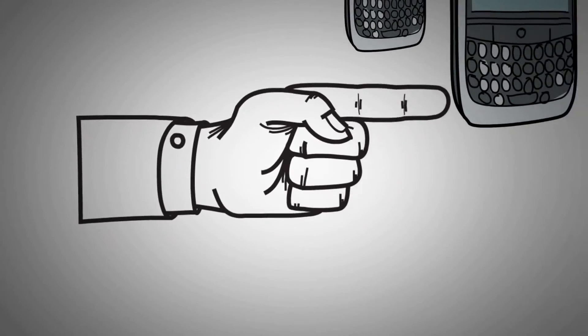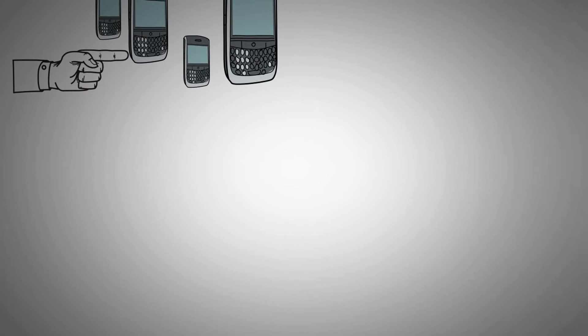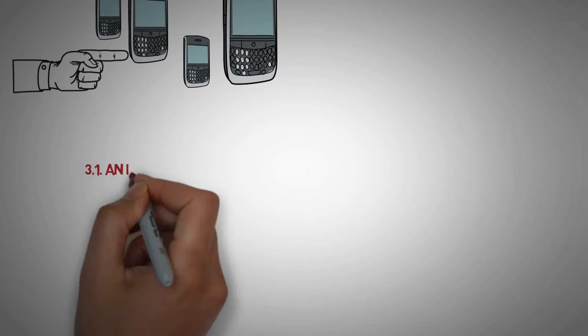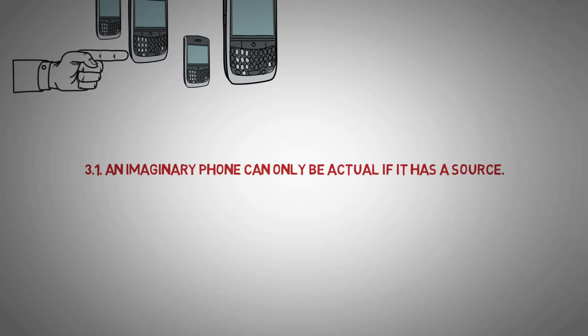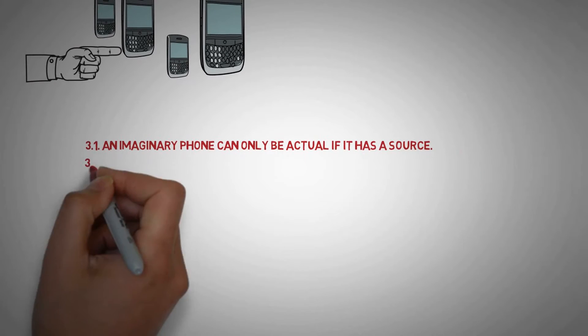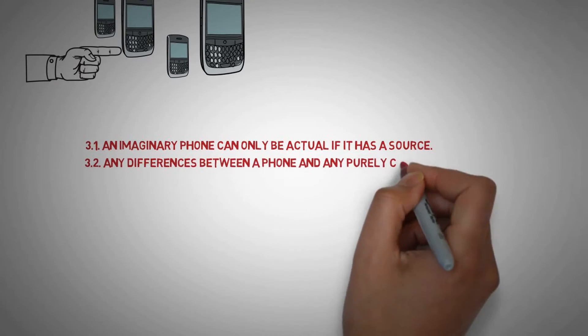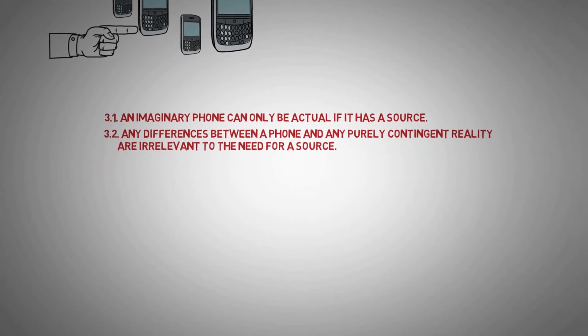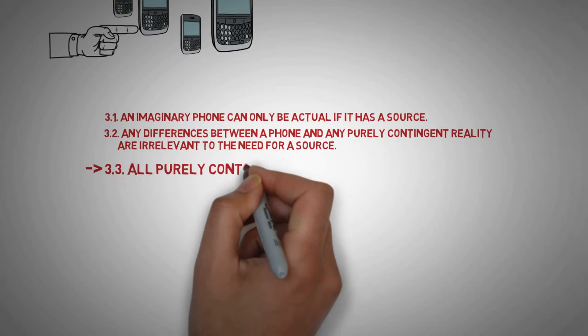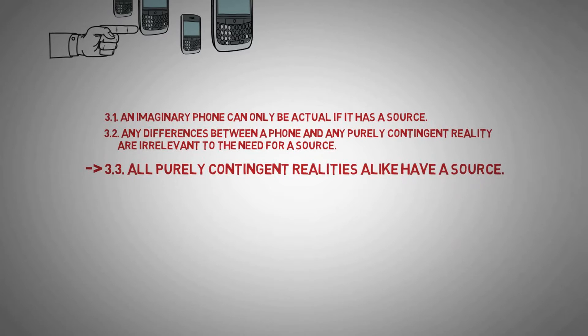Here's a supporting argument for the general principle of dependence. 3.1: An imaginary phone can only be actual if it has a source of its actuality. 3.2: Any differences between an imaginary phone and any other purely contingent reality are irrelevant to the need for a source. Then, if those premises are true, we get the dependence principle. All purely contingent realities alike depend on a source.